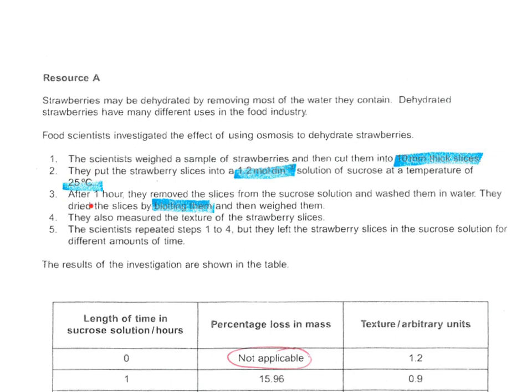Again, another thing that's important is the temperature, because temperature affects the kinetic energy of the molecules. If you've got a higher temperature, it would cause a faster rate of osmosis. So you have to have the same temperature to allow comparison. And the other thing that's important is blotting dry the strawberries after each experiment to remove all of the water. The strawberries could have different amounts of water on the outside of them, and water has mass, so again, this allows comparison.